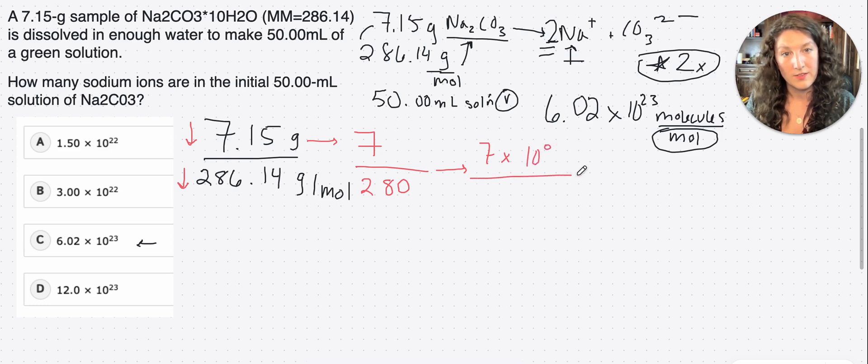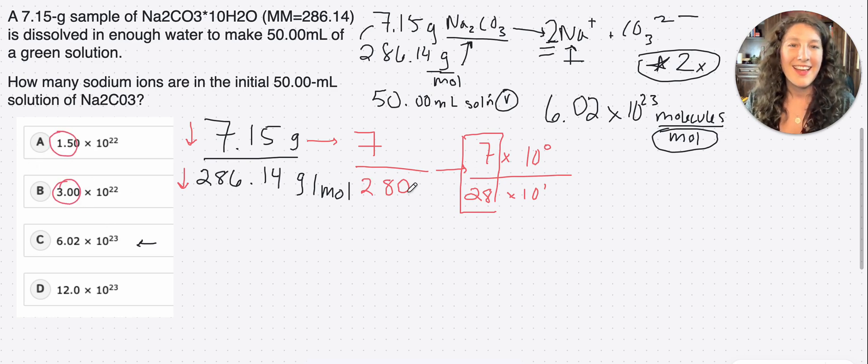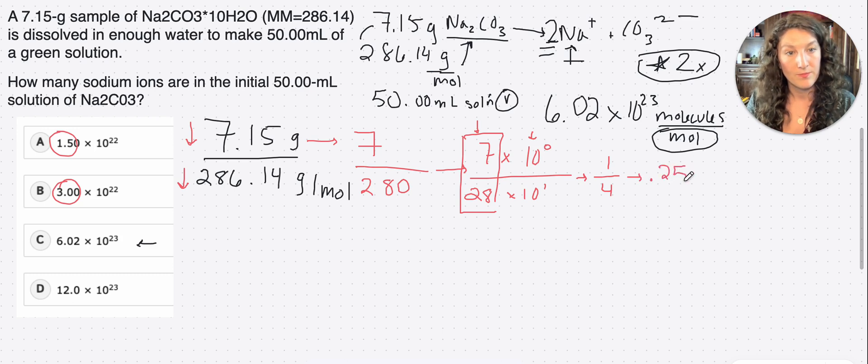Now still complicated, right? Because we have the extra zero here, which makes it kind of challenging. So what you can always do is you can always turn this fraction into scientific notation. So here we go, 7 times 10 to the zero, and then 28 times 10 to the one. Why are we doing this? Because now we have a very easily divisible set of mantissas. Mantissas are the number in front of the exponent, right? And so now we can very easily divide the mantissas, and you can do that separately from your exponent calculation. So 7 goes into 28 four times, so that will be 1 fourth, right? 1 fourth. And to turn that into decimal, since that's what we'll be using for our calculation, it's 0.25.